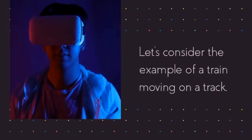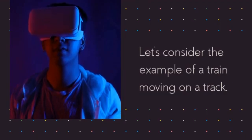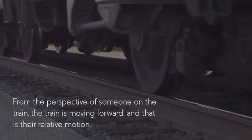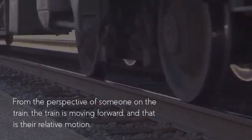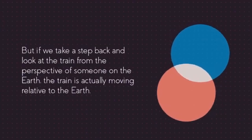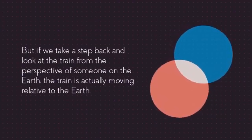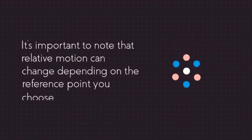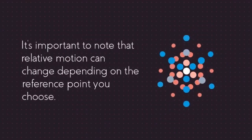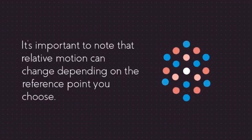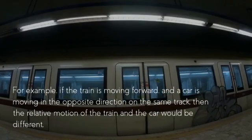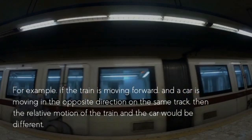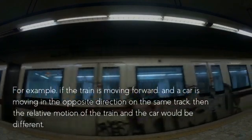Let's consider the example of a train moving on a track. From the perspective of someone on the train, the train is moving forward, and that is their relative motion. But if we take a step back and look at the train from the perspective of someone on the Earth, the train is actually moving relative to the Earth. It's important to note that relative motion can change depending on the reference point you choose. For example, if the train is moving forward and a car is moving in the opposite direction on the same track, then the relative motion of the train and the car would be different.